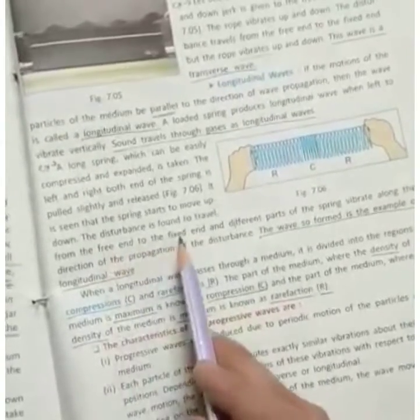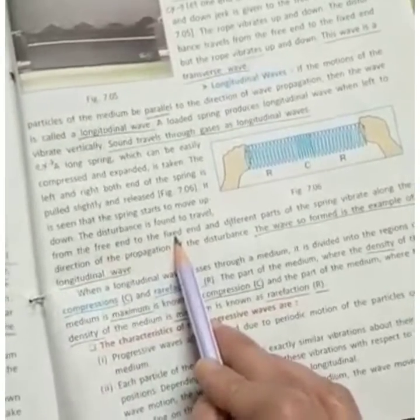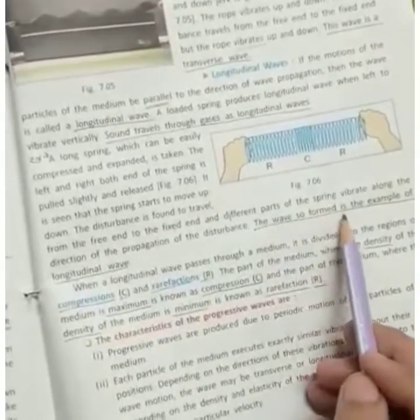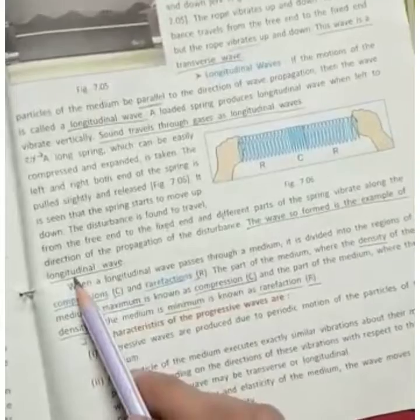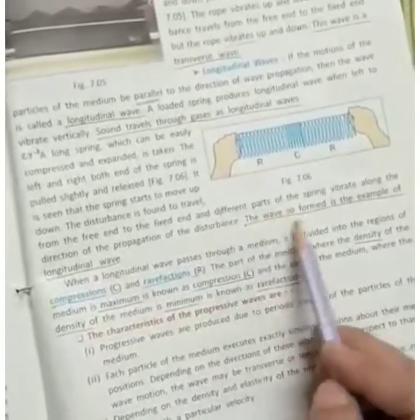You can see that the spring starts to move up and down. So, disturbance is found to travel from the free end to the fixed end and to different parts of the spring. The wave so formed is an example of a longitudinal wave.